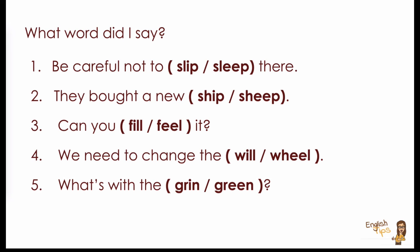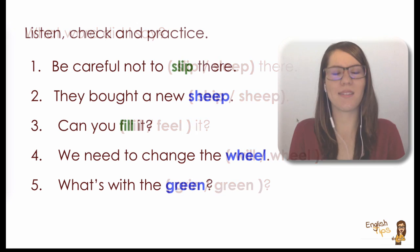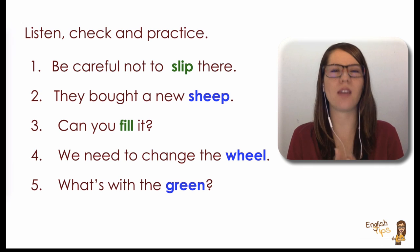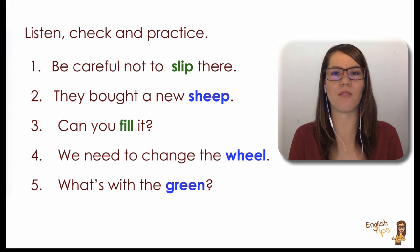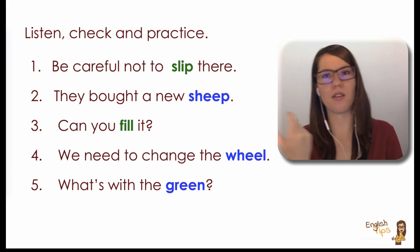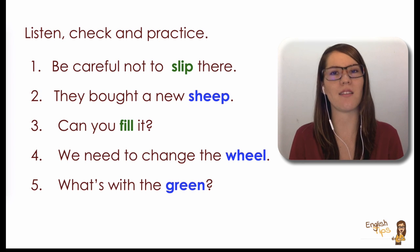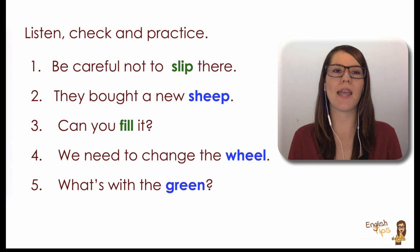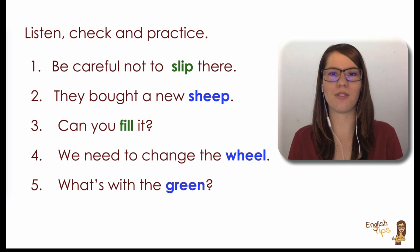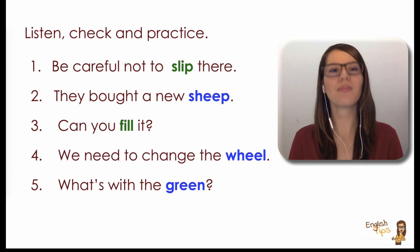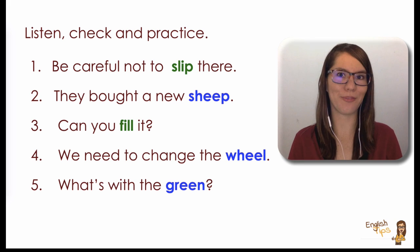So if you need repetition, please stop the video and go back. So if this exercise was difficult for you, you will have marked the answers with the right color: green for the lax sound or blue for /i:/, the tense sound. And well, the first sentence was: Be careful not to slip there. Slip, like fall on the floor, instead of sleep. Number two: They bought a new sheep. Sheep, the animal.